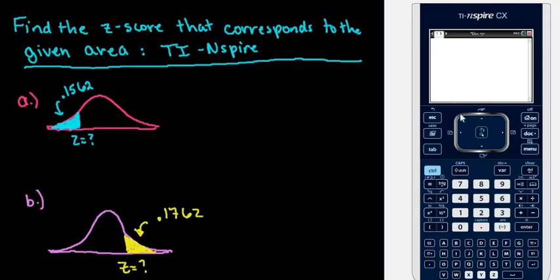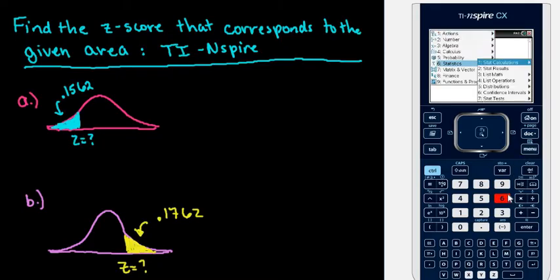After we open the calculator screen, we're going to go to Menu and Statistics, so Menu Statistics, and we're going to go to Distributions.